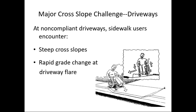Another major cross slope challenge is driveways: the grade of the driveway becomes the cross slope on the sidewalk and usually exceeds 2%. There are also grade breaks at the flares where a small front wheel of a wheelchair can leave the ground — a dangerous situation since any wheel leaving the ground risks the chair tipping over. This brand new driveway at 7% grade creates a 7% cross slope on the sidewalk, making it an inaccessible section that should never have been permitted.